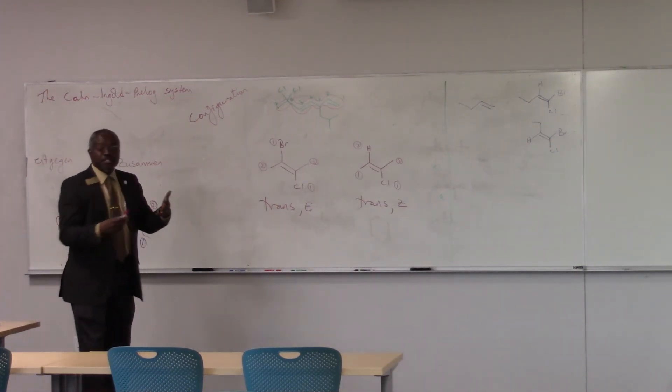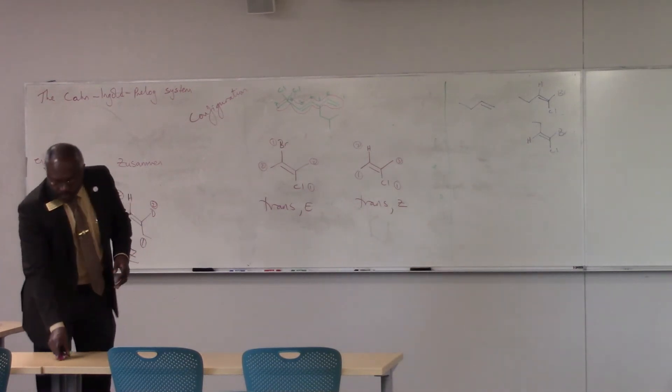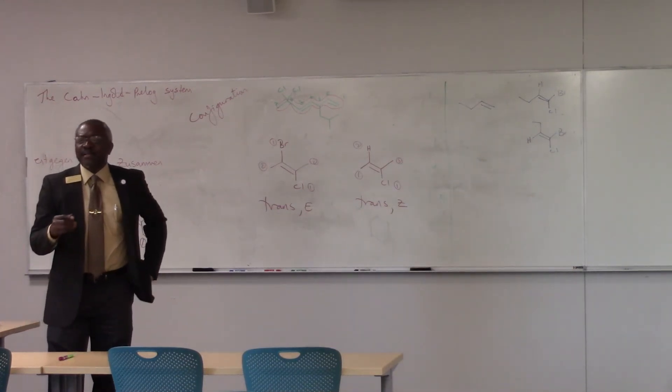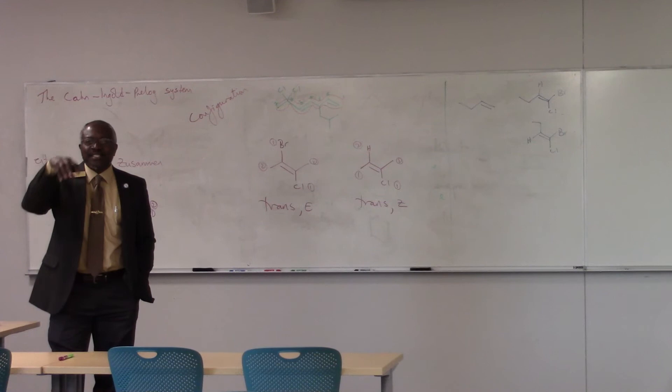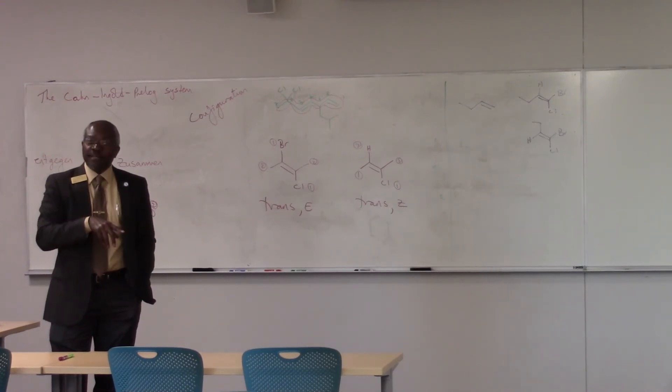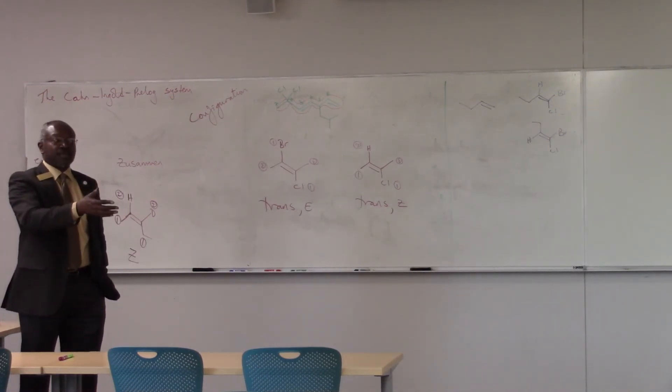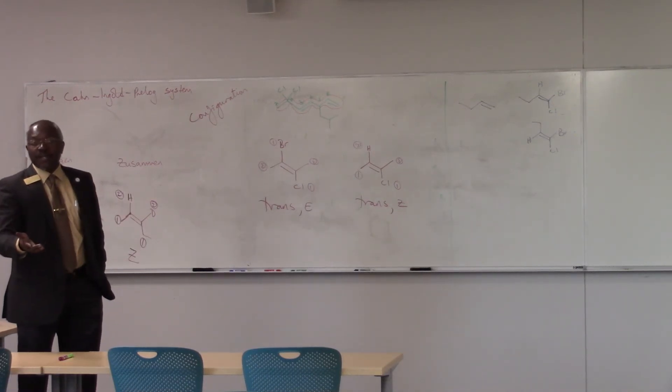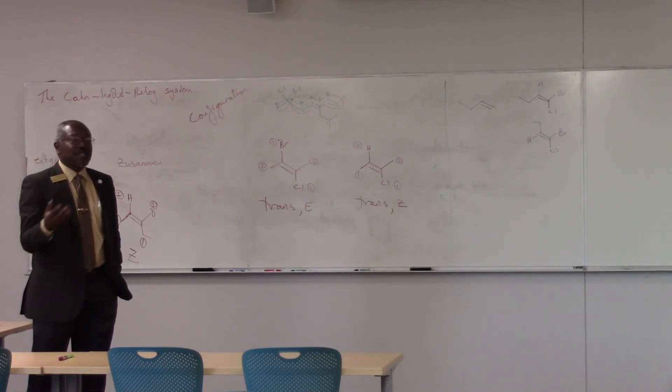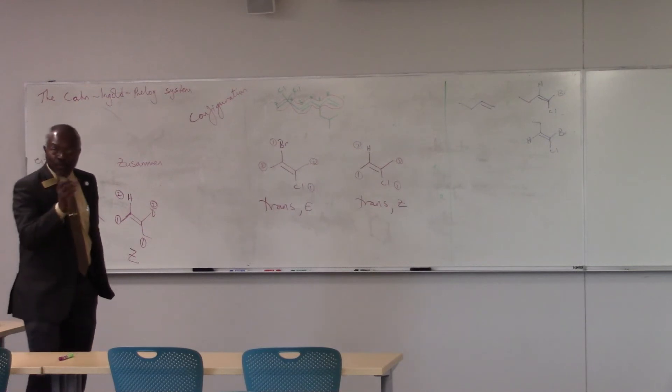And the reason that is the case is because cis and trans speak directly to the identity of the atoms, of the groups attached to the vinylic carbon. E and Z don't. They don't care who you are. They just care what's your priority. So sometimes a trans compound is an E compound. Sometimes a trans compound is Z. Sometimes cis is Z. Sometimes cis is E. They're two different naming schemes. So they won't always match.